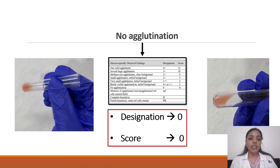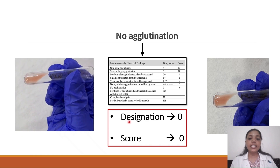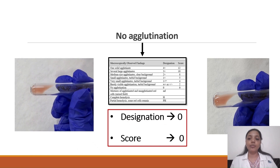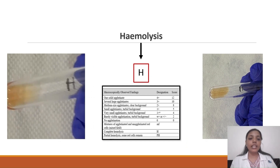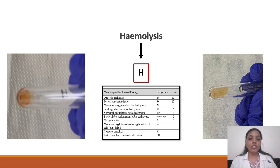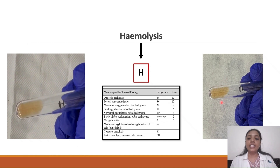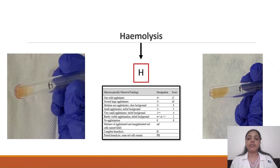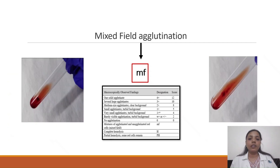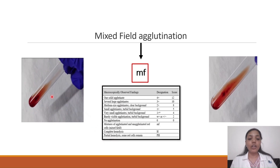When there is no agglutination at all and the cells are almost lysed, the designation is 0 and the score is also 0. A hemolyzed sample is represented by the letter H, where the cells are lysed. Mixed field agglutination, represented as 'mf', shows a mixture of agglutinated and unagglutinated cells — as seen in this patient who received ABO-incompatible transfusion where the patient was B positive and the donor was A positive.